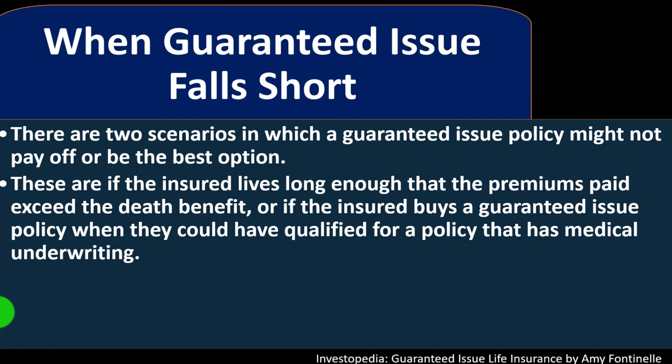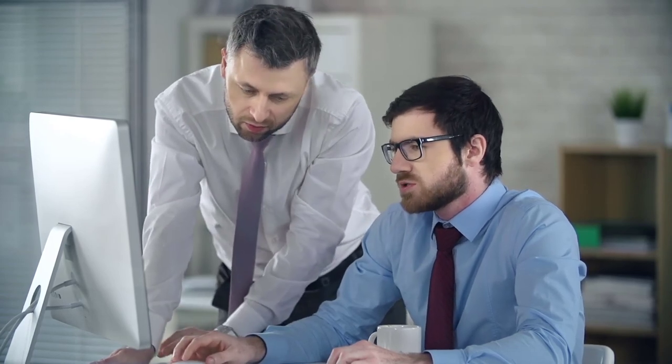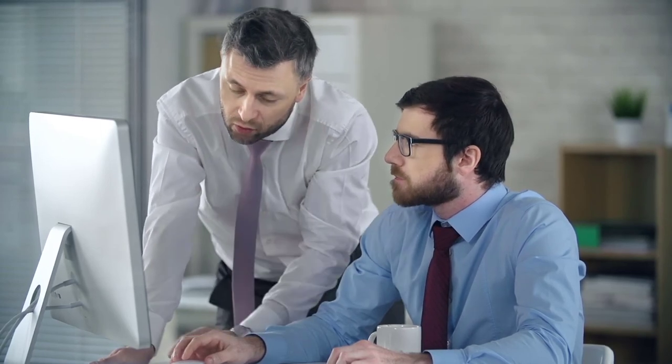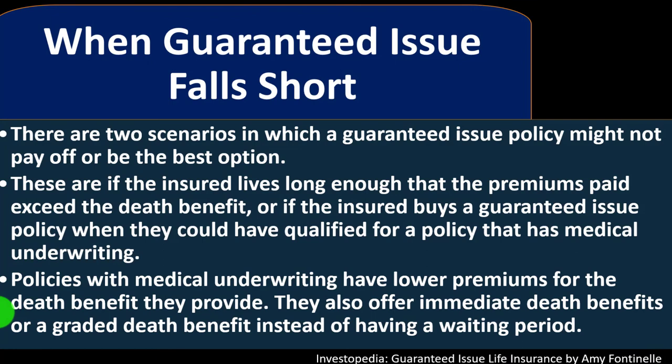There are two scenarios in which a guaranteed issue policy might not pay off or be the best option: if the insured lives long enough that premiums paid exceed the death benefit, or if the insured buys a guaranteed issue policy when they could have qualified for a policy with medical underwriting. Policies with medical underwriting have lower premiums for the death benefits they provide and offer immediate death benefits or a graded death benefit instead of a waiting period.